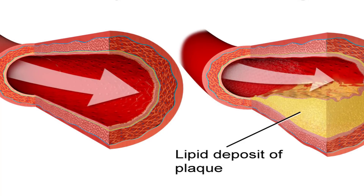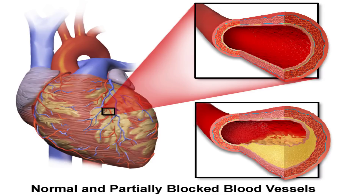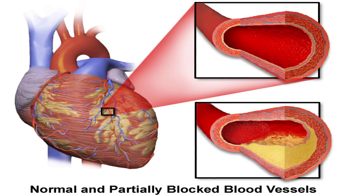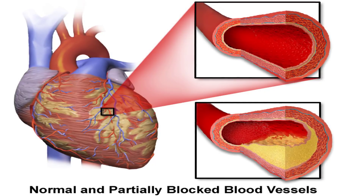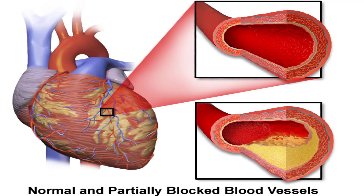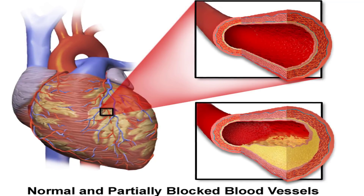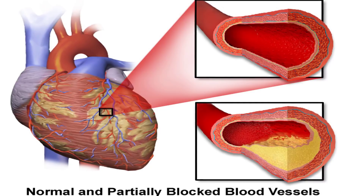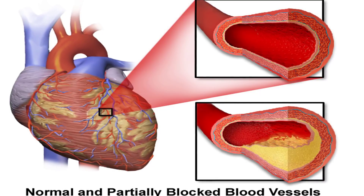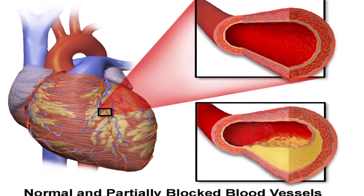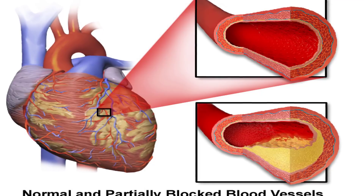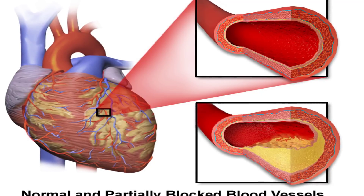Other symptoms of CAD include pain in the arms or left shoulder, shortness of breath, sweating, and dizziness. You may experience more symptoms when your blood flow is more restricted. If a blockage cuts off blood flow completely, your heart muscle will start to die — this is a heart attack. Do not ignore any of these symptoms, especially if they last longer than five minutes. Immediate medical treatment is necessary.